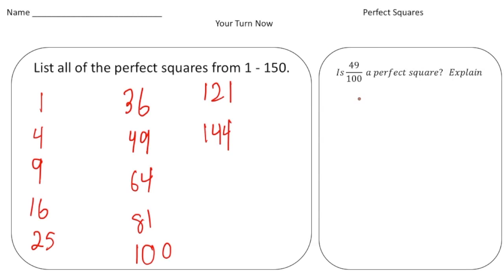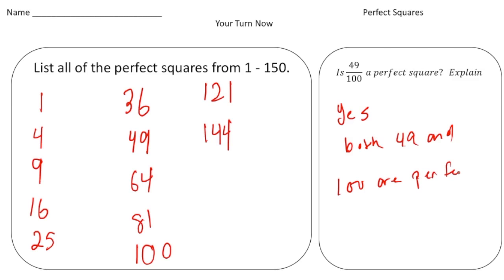The second part asks: is forty-nine one-hundredths a perfect square? Explain. The answer is yes, because both forty-nine and one hundred are perfect squares. To get forty-nine one-hundredths, we multiply seven-tenths times seven-tenths: seven times seven gives us forty-nine, and ten times ten gives us one hundred.